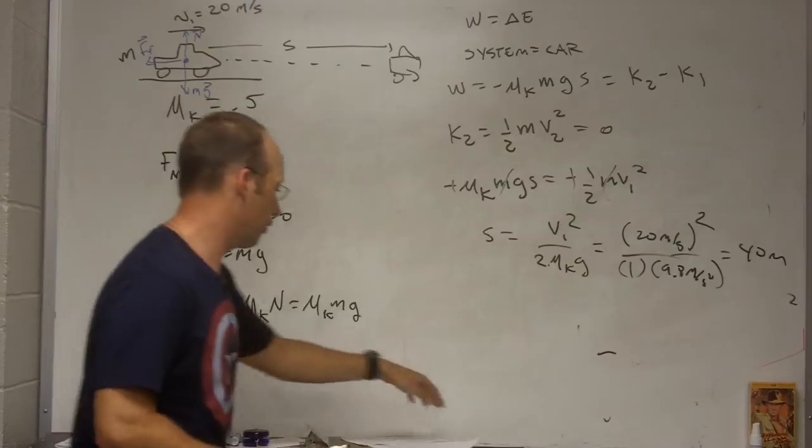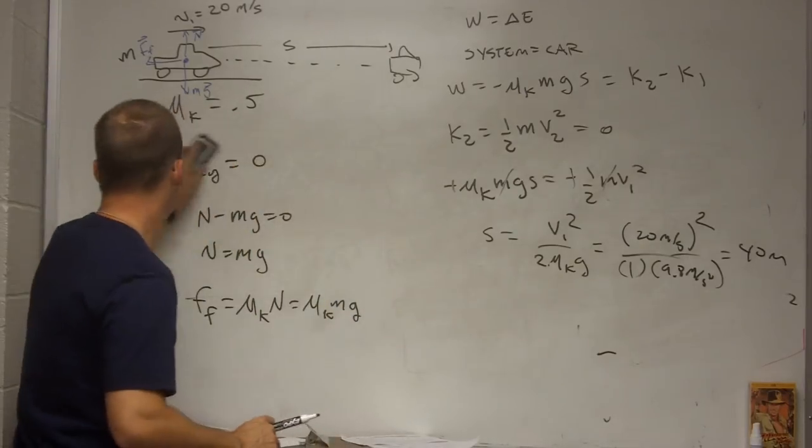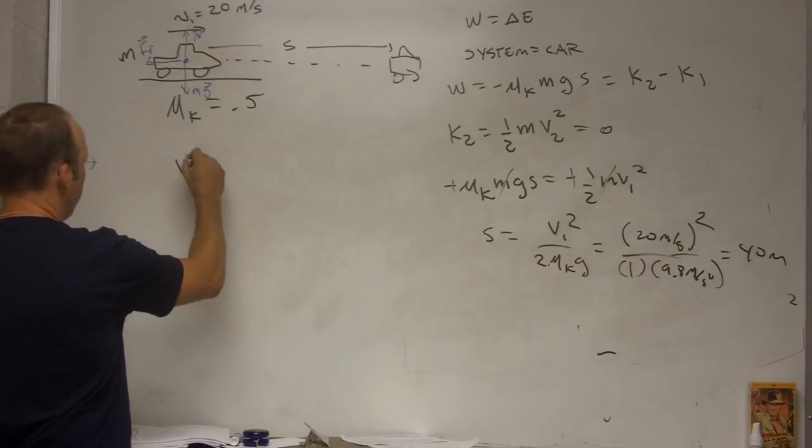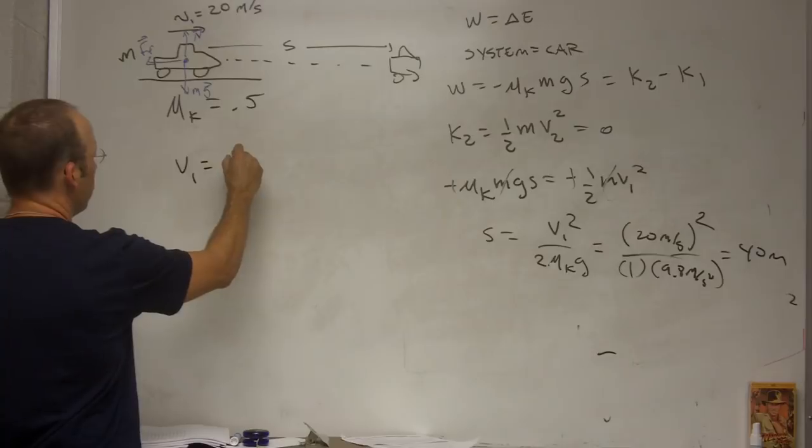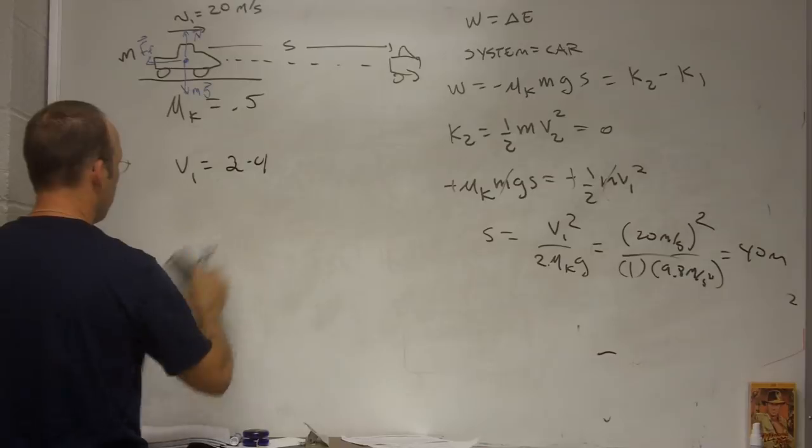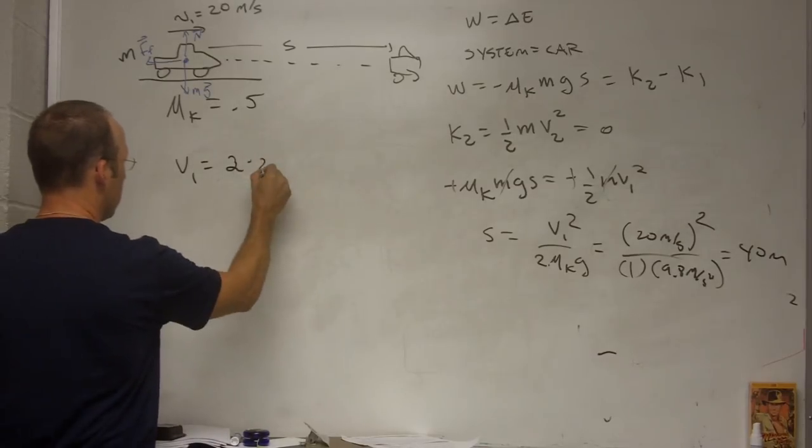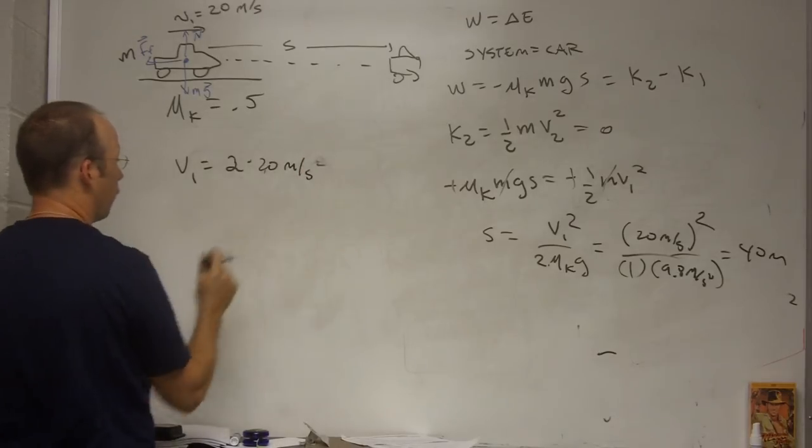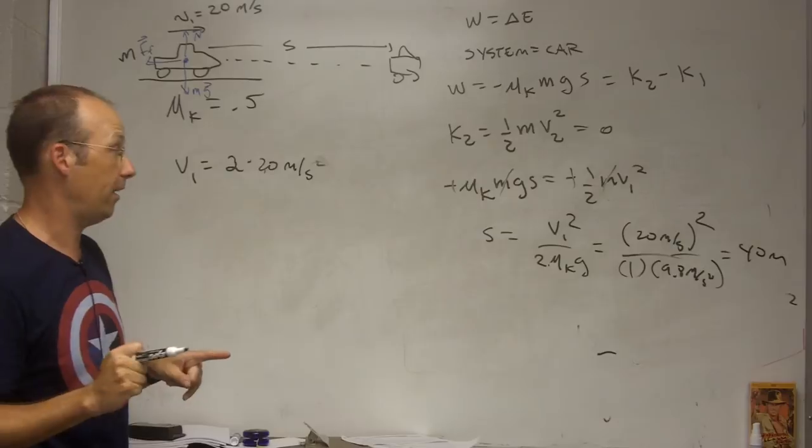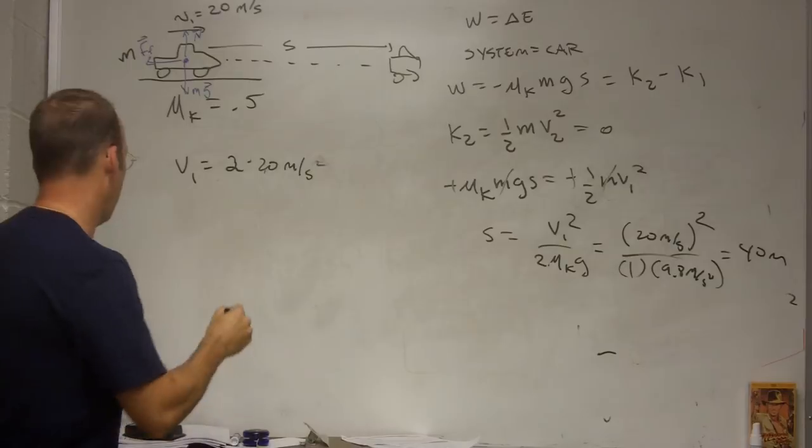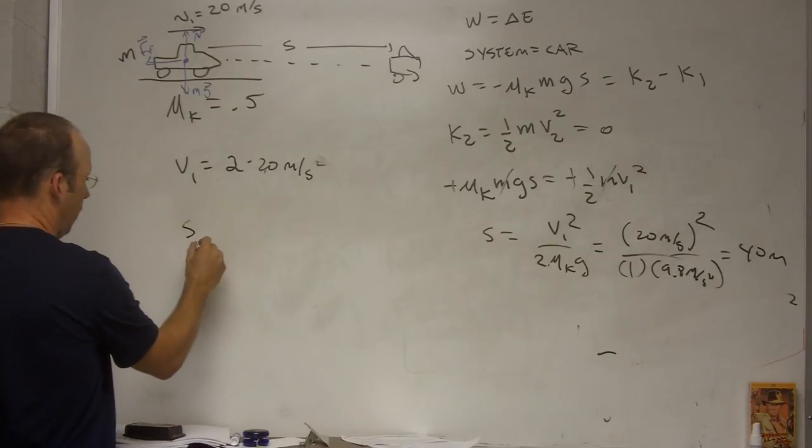okay, now let's take this to one other example. What if V1 equals 2 times, I'm sorry, 2 times 20 meters per second squared, meters per second, so 40. What if you're going twice as fast? Then, nothing changes, except in the end, I can calculate, let me calculate S2, it's just going to be,